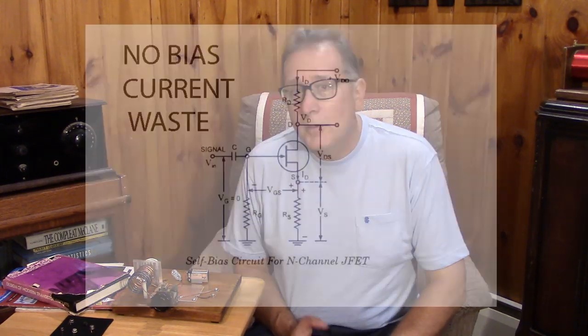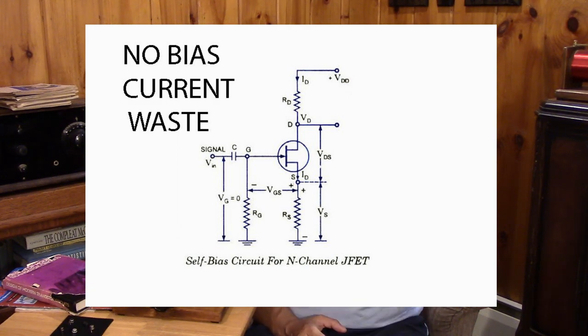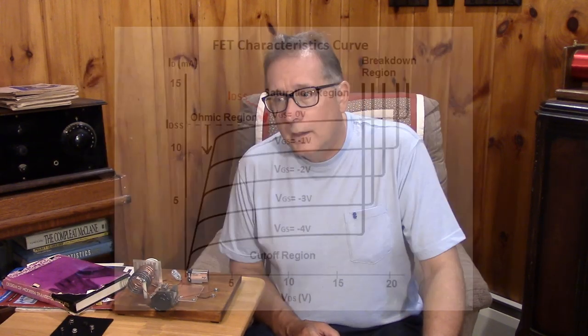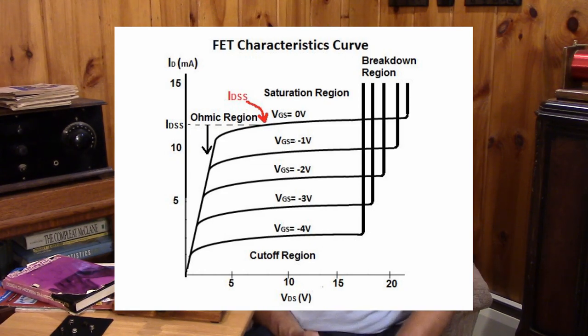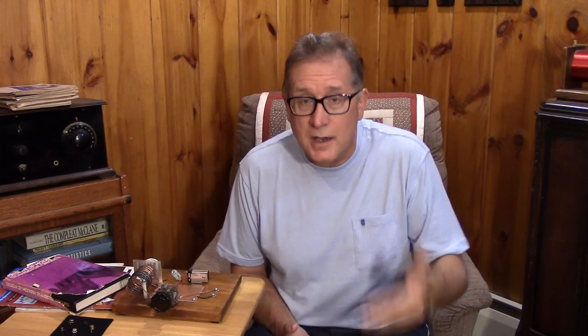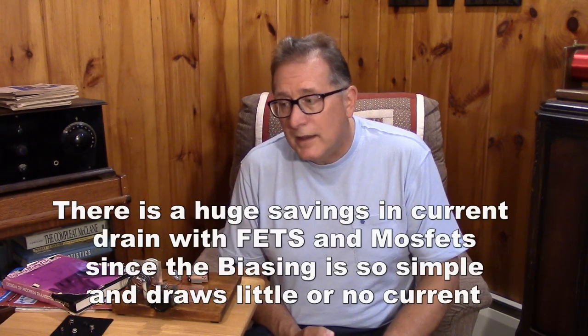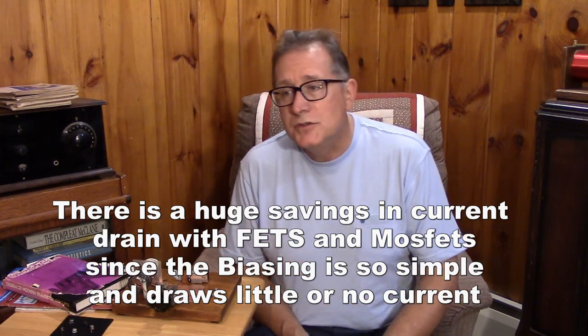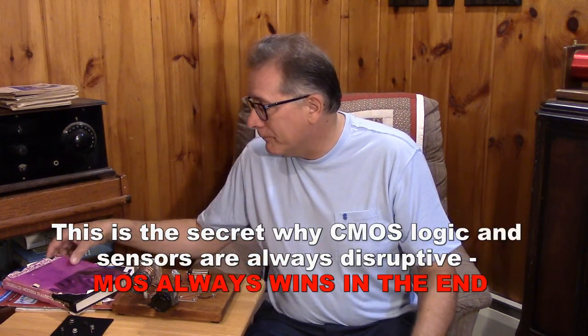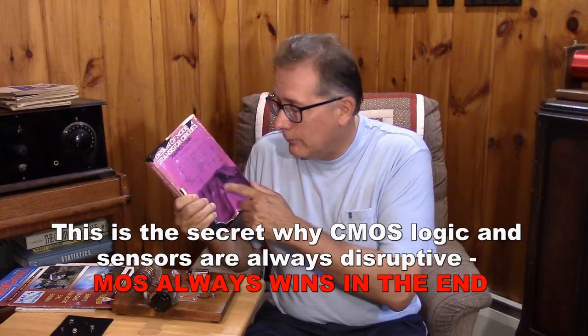Speaking of field-effect transistors and depletion-type devices, they're much like vacuum tubes in that they require a negative bias to keep them off. So you'll see that their load lines are controlled by negative volts. If you were to operate them with zero volts or positive voltage like we do with bipolars — where we actually have to turn bipolar transistors on to utilize them — the device would be completely on like a switch and you wouldn't be able to control it at all. The exception is the enhancement-mode FET, which can tolerate positive control voltage as well as negative.